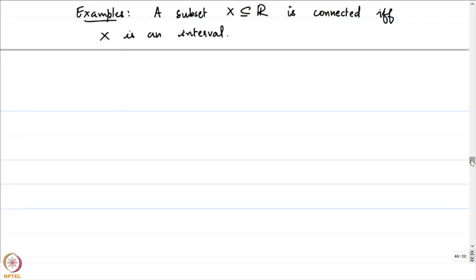We are assuming a course on real analysis while we do this course. We have given a characterization of how connected sets in R behave. We will not be able to give this kind of characterization on the complex plane; however, we will give an alternate description of how connected open sets in C will look.